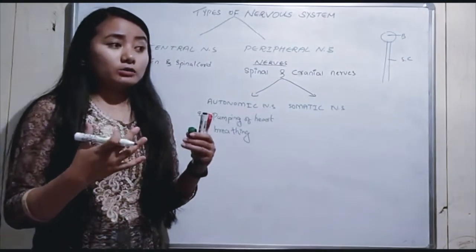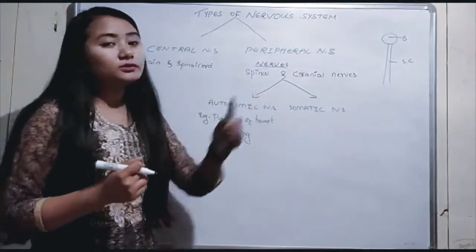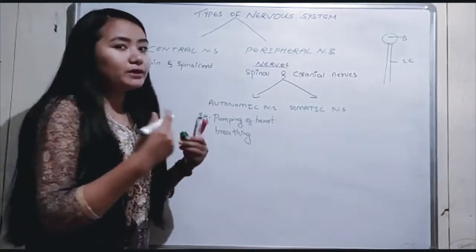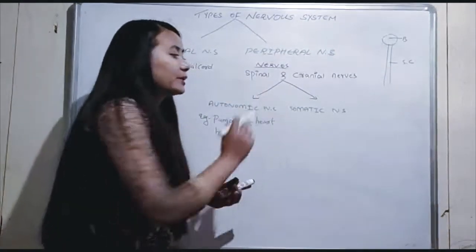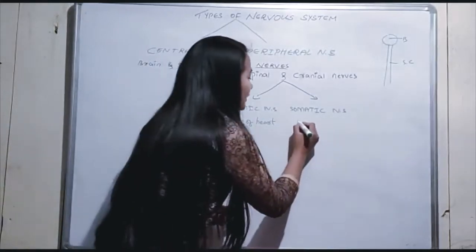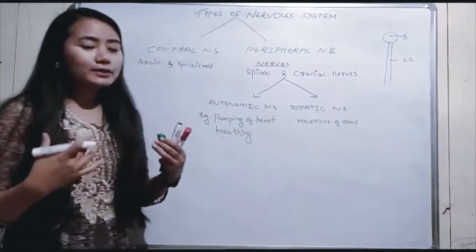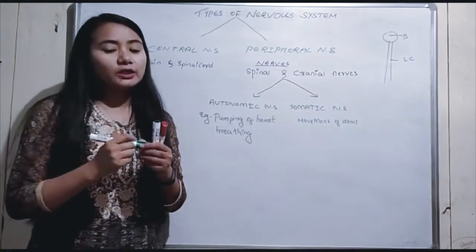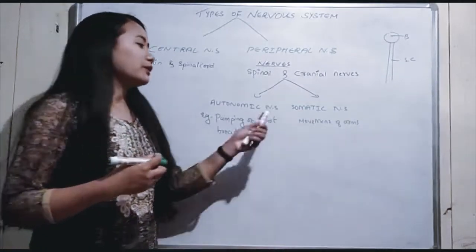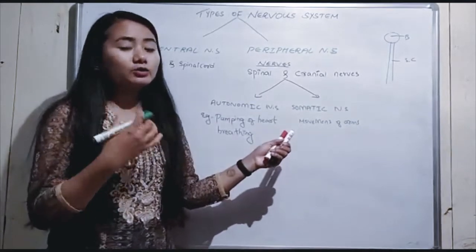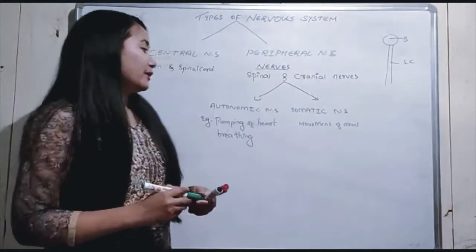The Somatic Nervous System controls voluntary activities. For example, the movement of our hands, arms, and legs — we can consciously control these movements. This is the Somatic Nervous System: it governs activities that are under our voluntary control.